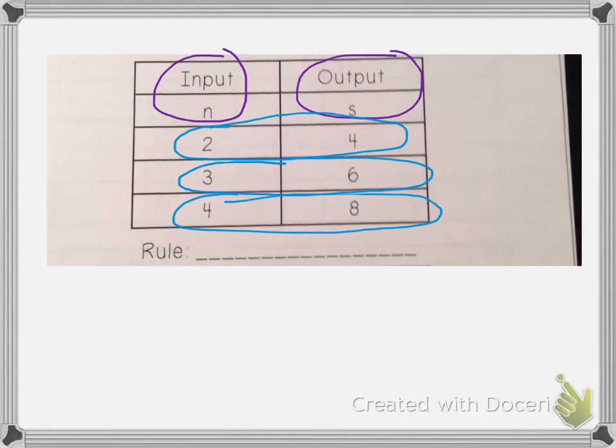When I have numbers getting bigger, there's two ways I can do that. I can add, or I can multiply. So I know two plus two is four. So that could work. Then I'm going to try it on the next one. If I do three plus two, that equals five. So it can't be plus two.